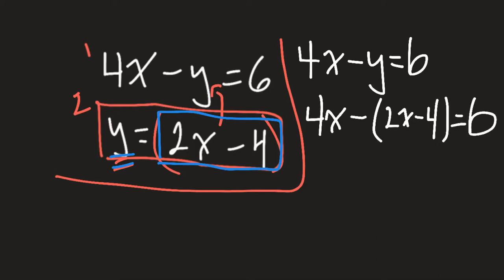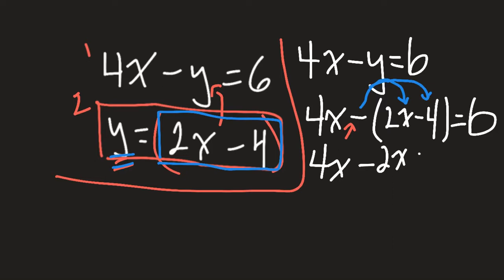The next thing I'm going to do is break this out of the brackets. Don't forget, you're going to have to multiply that negative symbol to both terms inside the brackets — we use the distributive property to distribute that in. So I rewrite 4x. Negative 1 times positive 2x is negative 2x. And negative 1 times negative 4 is positive 4. So: 4x minus 2x plus 4 equals 6.